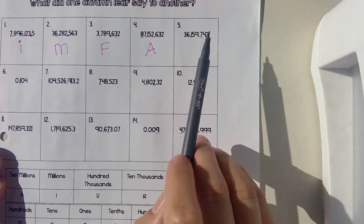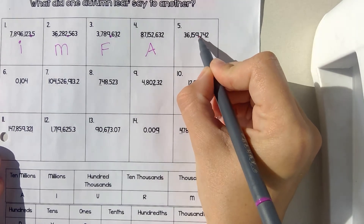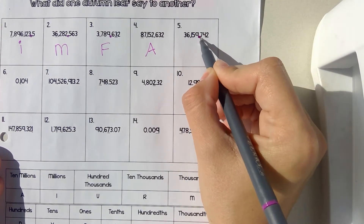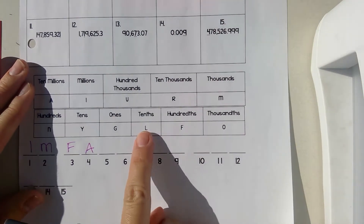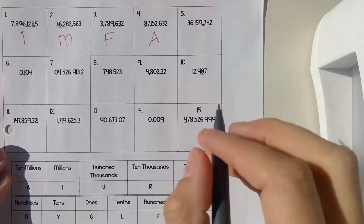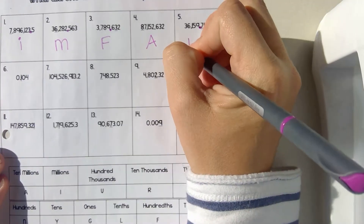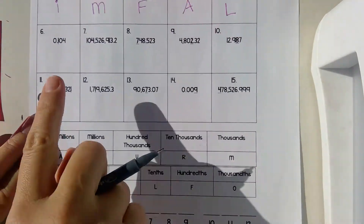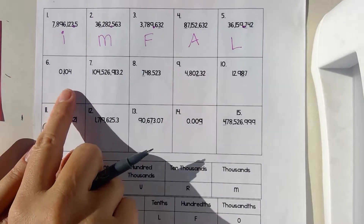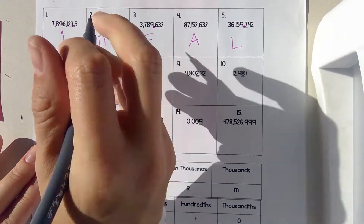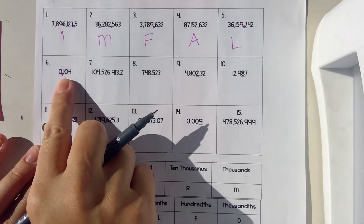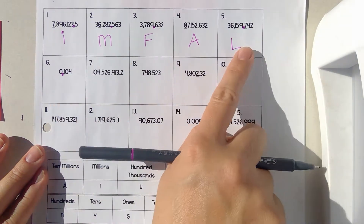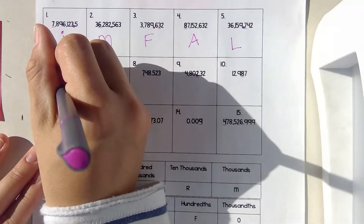Number five — right here is my decimal place, so this is a decimal place value. That is tenths. Tenths is an L. Number six — this is also a decimal, and that first place value to the right is tenths as well, so it was also an L.